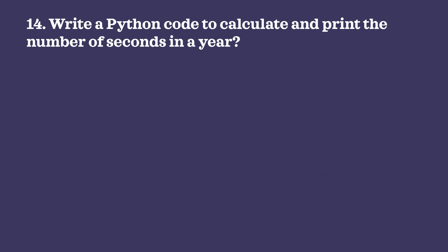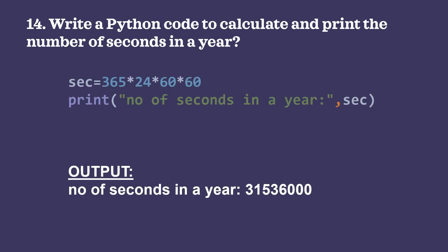Question 13: write a Python program to calculate and print the number of seconds in a year. A year has 365 days, one day has 24 hours, one hour is 60 minutes, one minute is 60 seconds. sec = 365 * 24 * 60 * 60. The number of seconds in a year is 31,536,000.